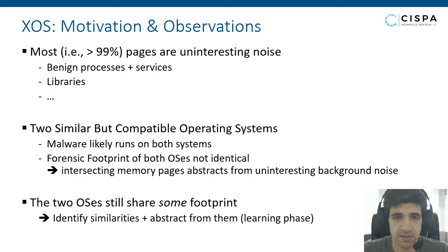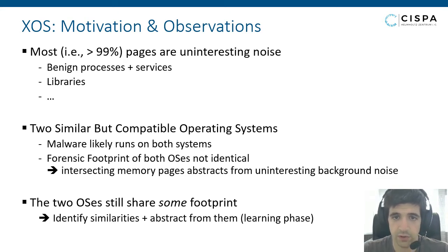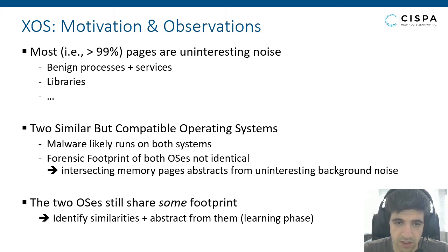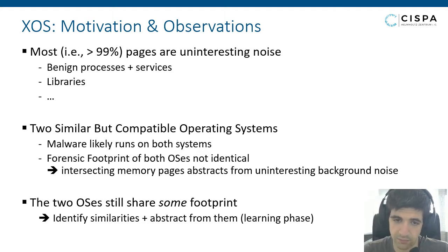The very basic motivation and observations of this idea are as follows. First, most of the pages in the memory dump are really uninteresting for us — we can consider them noise. We have benign processes, services, kernel code, libraries, device drivers, and so on. They are not interesting and completely useless for generating a signature for the malware.